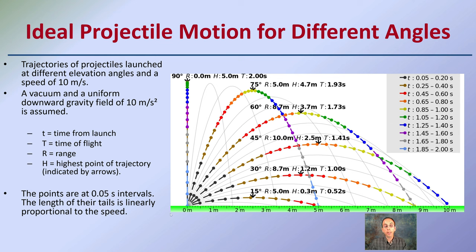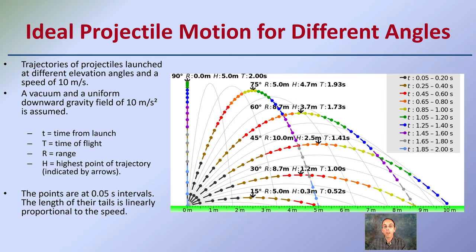Angle has a large role to play as well. This example shows different angles being fired and looking at different timestamps. These projectiles are launched at different elevation angles at a speed of 10 meters per second, with a vacuum and uniform downward gravity field assumed. In the graph, little t is time from launch, big T is time of flight, r is range, and h is the highest point of trajectory. The points are at 0.5-second intervals and the length of their tails is proportional to the speed, helping visualize what's going on when bullets are fired at different angles.